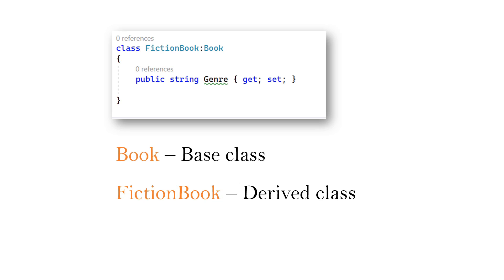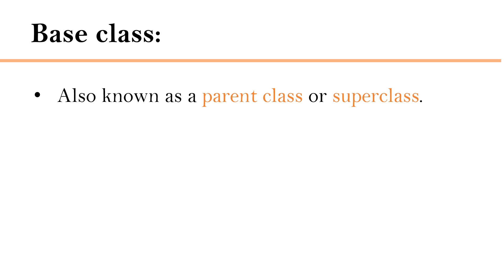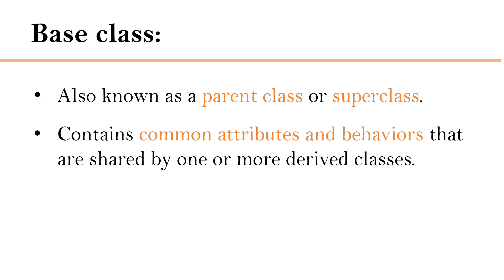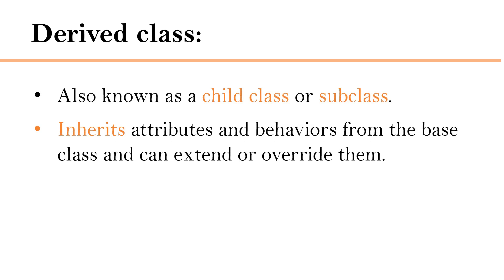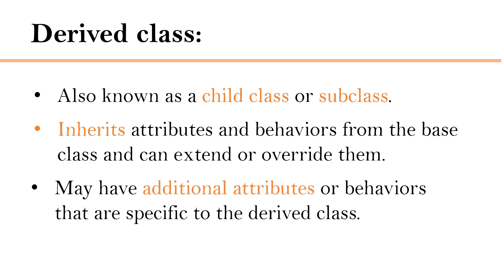In object oriented programming, base class and derived class are terms used to describe the relationship between two classes. A base class is also known as a parent class or superclass — it contains common attributes and behaviors shared by one or more derived classes. A derived class is also known as a child class or subclass — it inherits attributes and behaviors from the base class, can extend or overwrite them, and may have additional attributes or behaviors specific to itself.